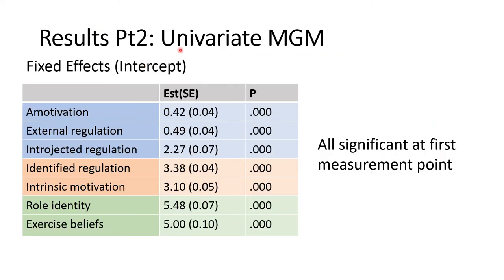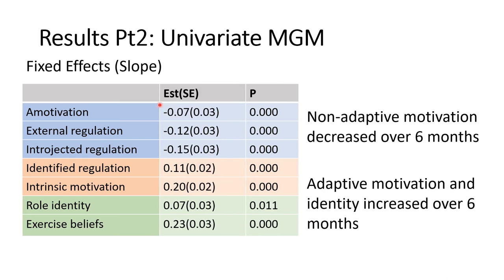The univariate multi-level growth curve model looked at general change across the entire study. All intercepts at time point one are significant, meaning all variables are significantly different from zero. Looking at the slopes, the non-adaptive forms of motivation actually decrease significantly over time, whereas the adaptive forms of motivation are increasing, and so is identity. So we have non-adaptive motivation decreasing over six months while adaptive forms and identity are increasing.